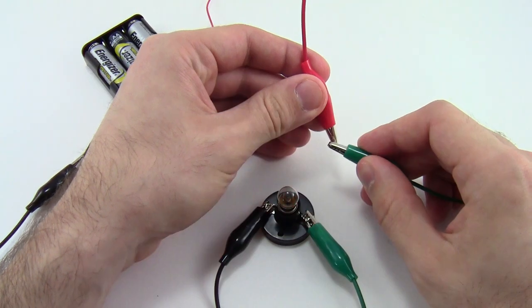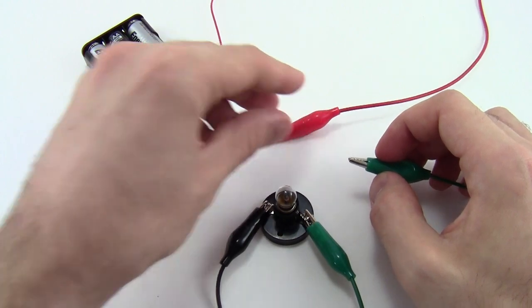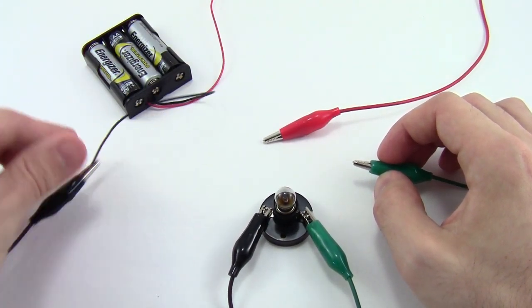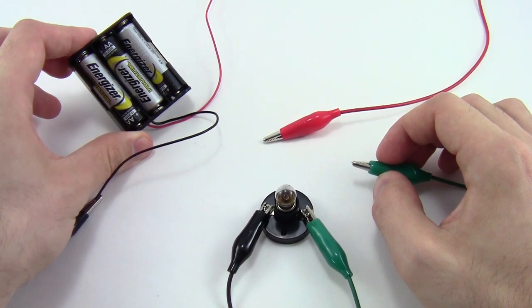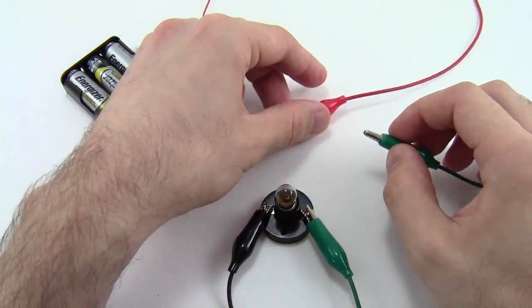So check that your light bulb lights up when you touch these two alligator clips together. If it does not light up, make sure that all your connections are secure and you don't have a loose alligator clip, and that you did not put a battery in the battery pack backwards. And once that's working, you are ready to start your experiment.